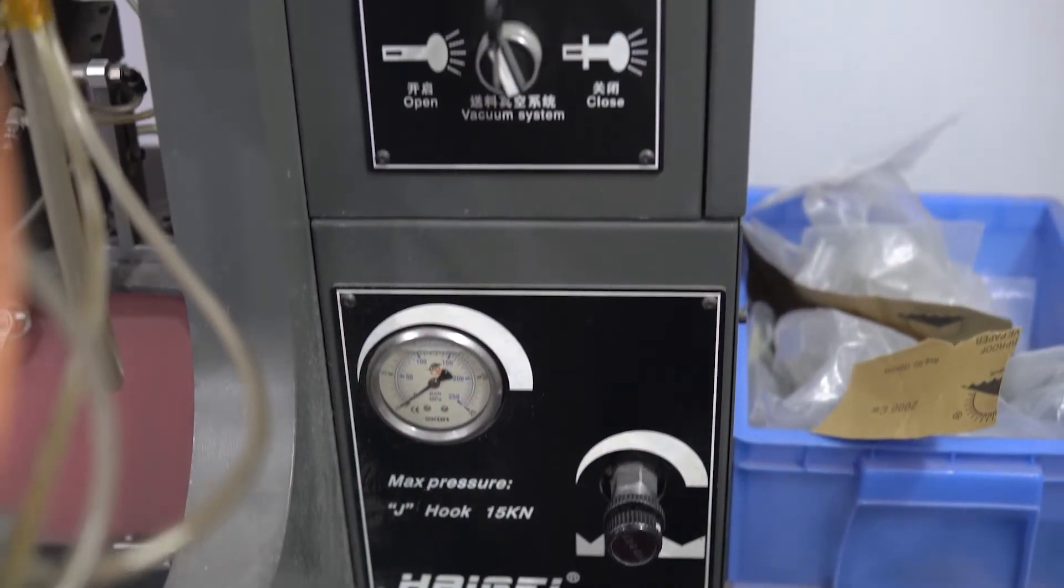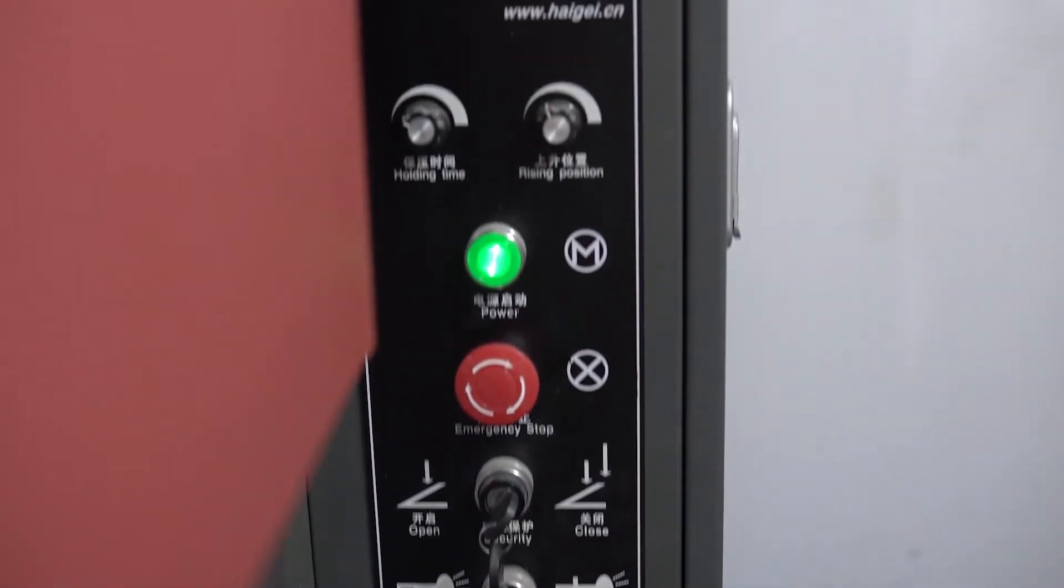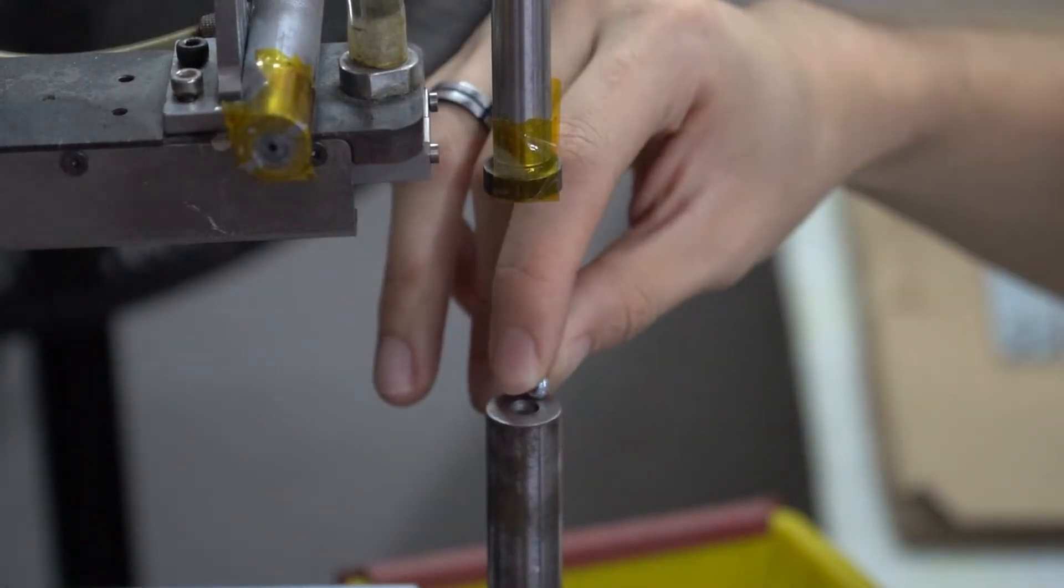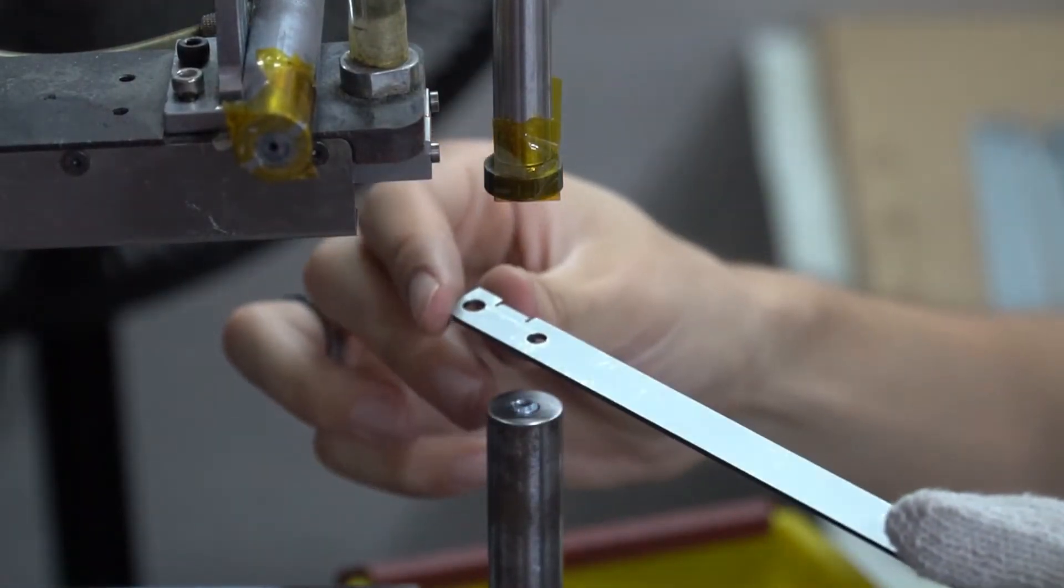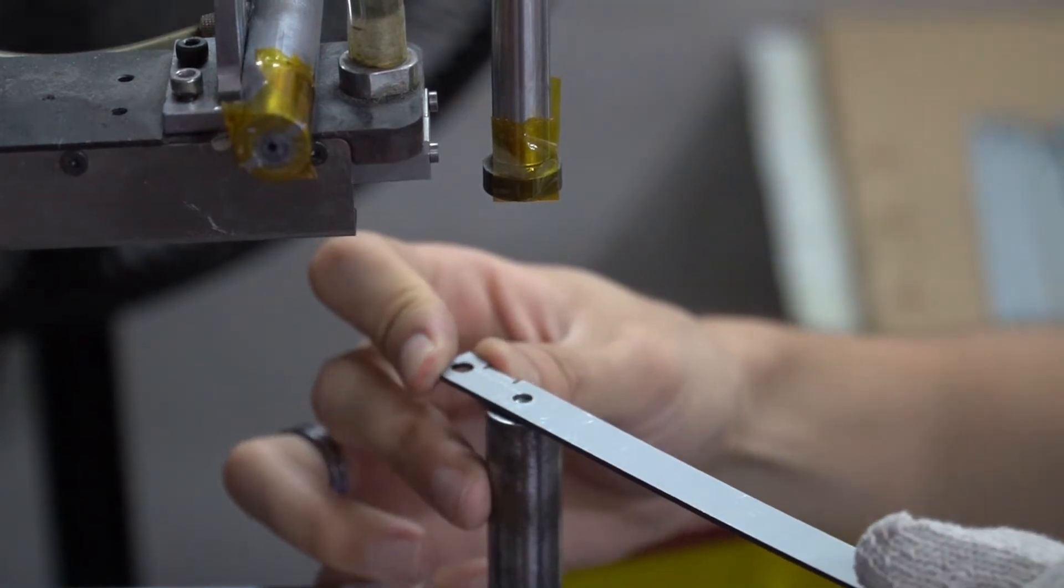To make a good pressure riveting aluminum plate, first put the pressure riveting parts on the pressure riveting machine, then place the aluminum part. After fixing,